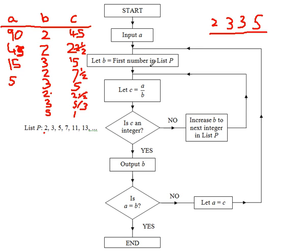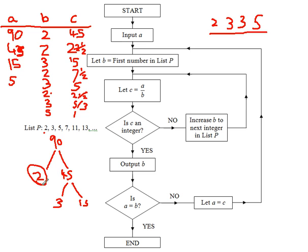The significance of this is, as we're going through this number, what we're doing is starting with 90 and dividing it by prime numbers. The first prime number we can divide it by is 2, and that leaves 45. Then we started with 45 and saw if we could divide it by 2 — we couldn't — so we divided it by 3. It's a bit like one of those factor tree things from lower down the school. When we get to 15, we see if 2 divides it — it doesn't. We see if 3 divides it — it does. And we ended up with 3 times 5.